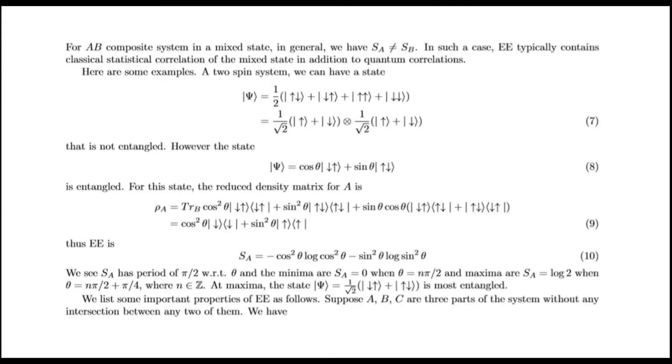For A and B composite system in a mixed state, in general, we have SA not equal to SB. In such a case, entanglement entropy typically contains classical statistical correlation of the mixed state in addition to quantum field correlations. Here are some examples.